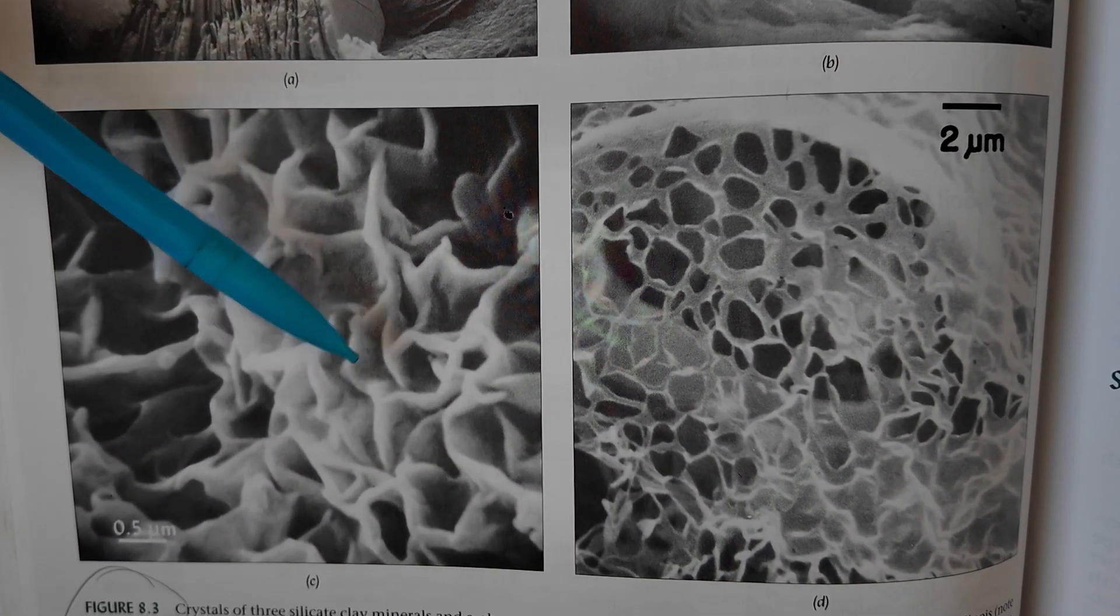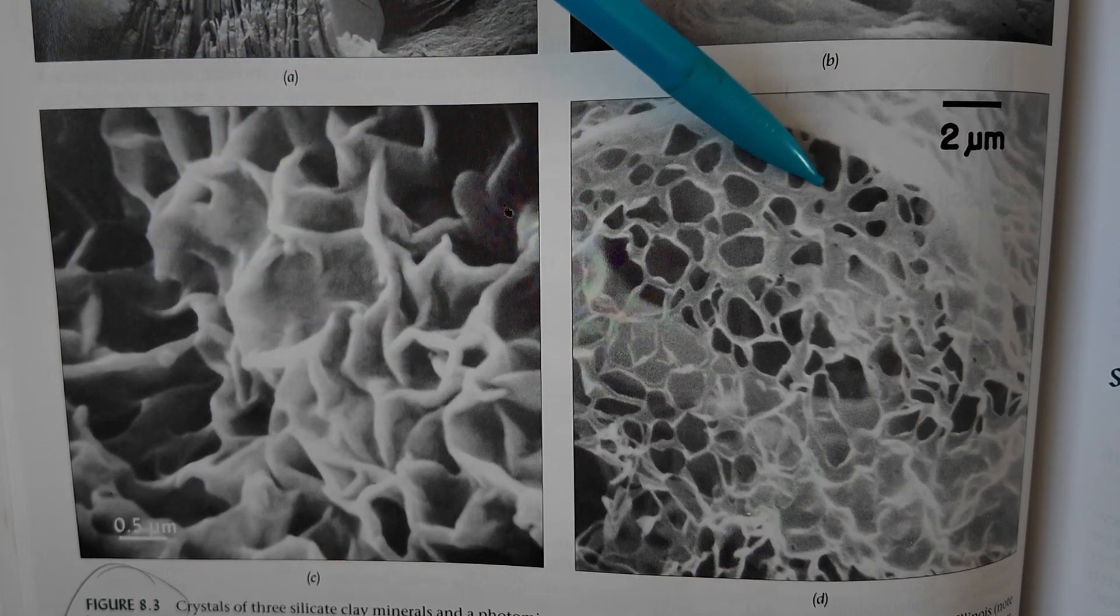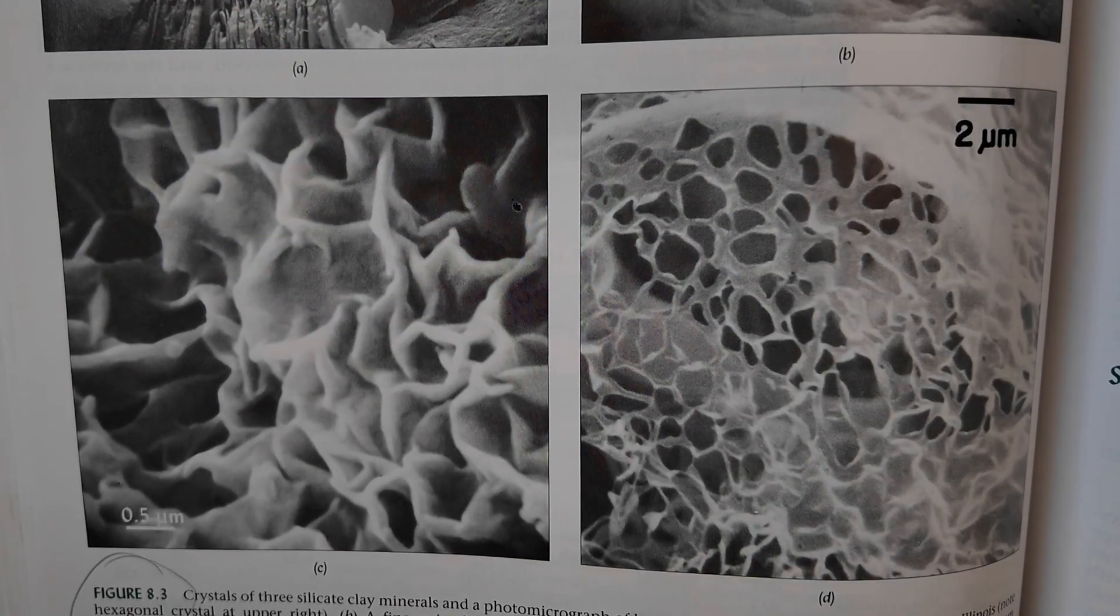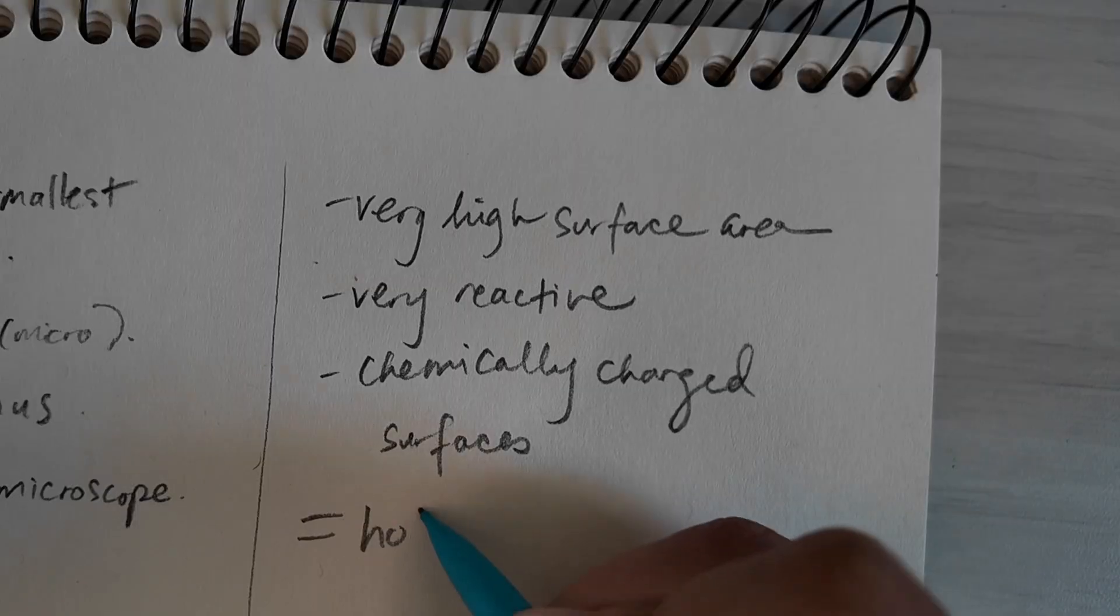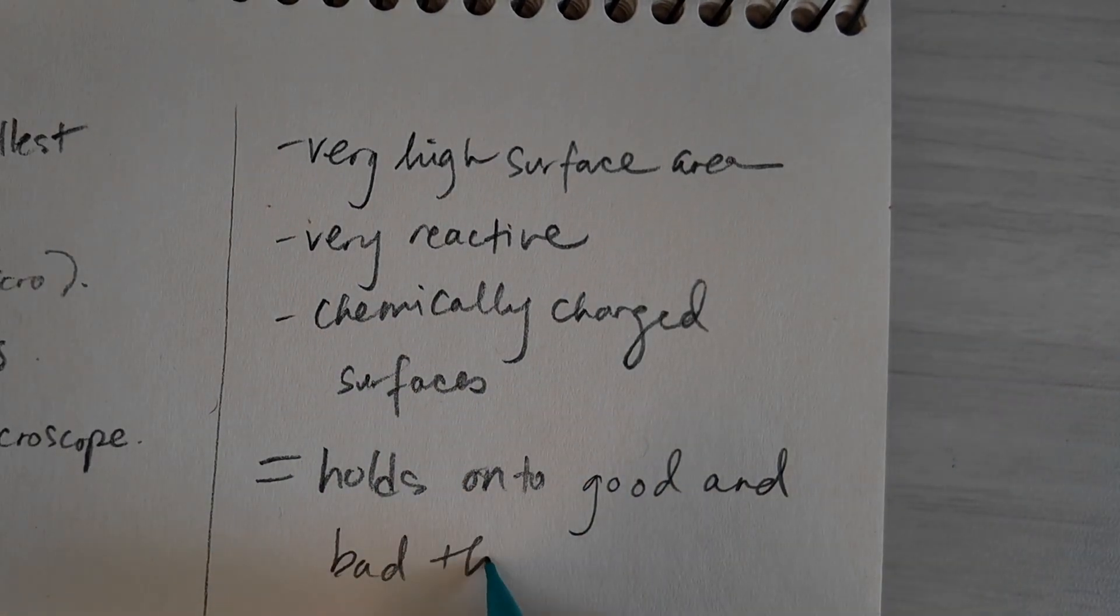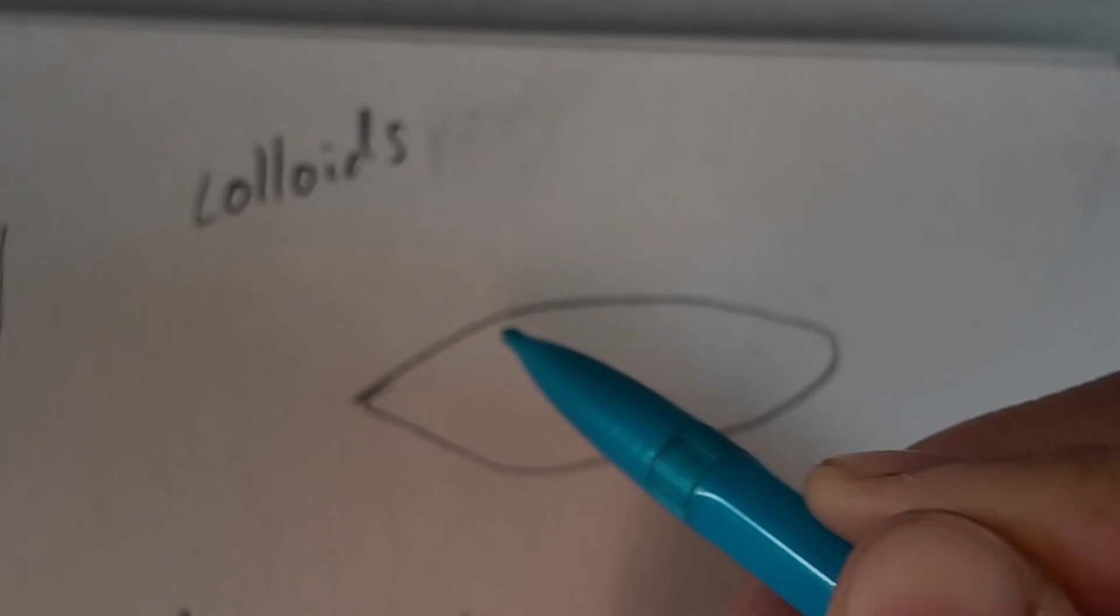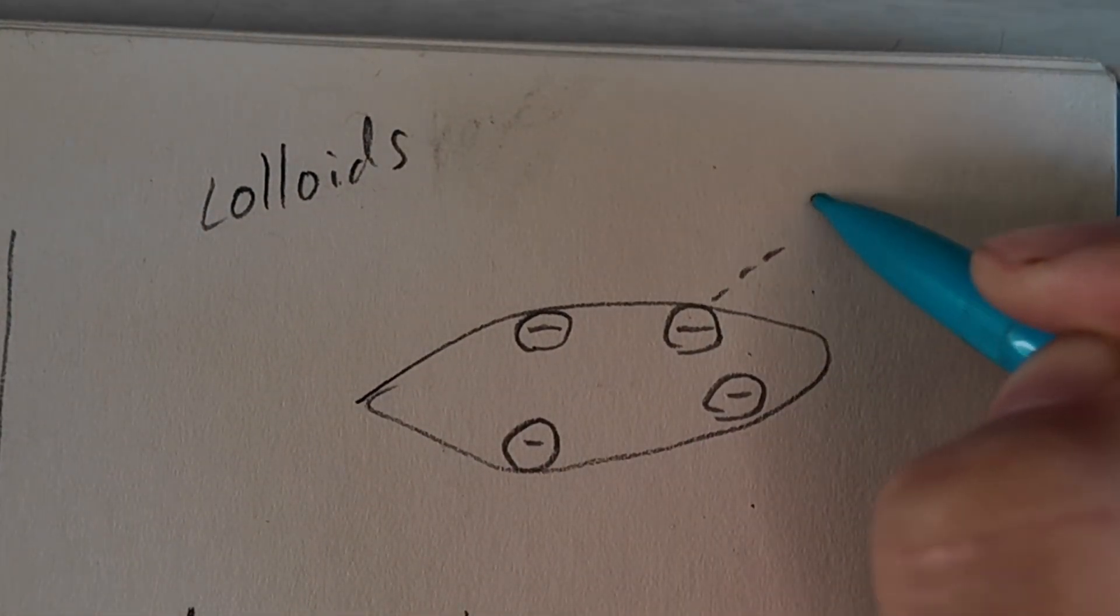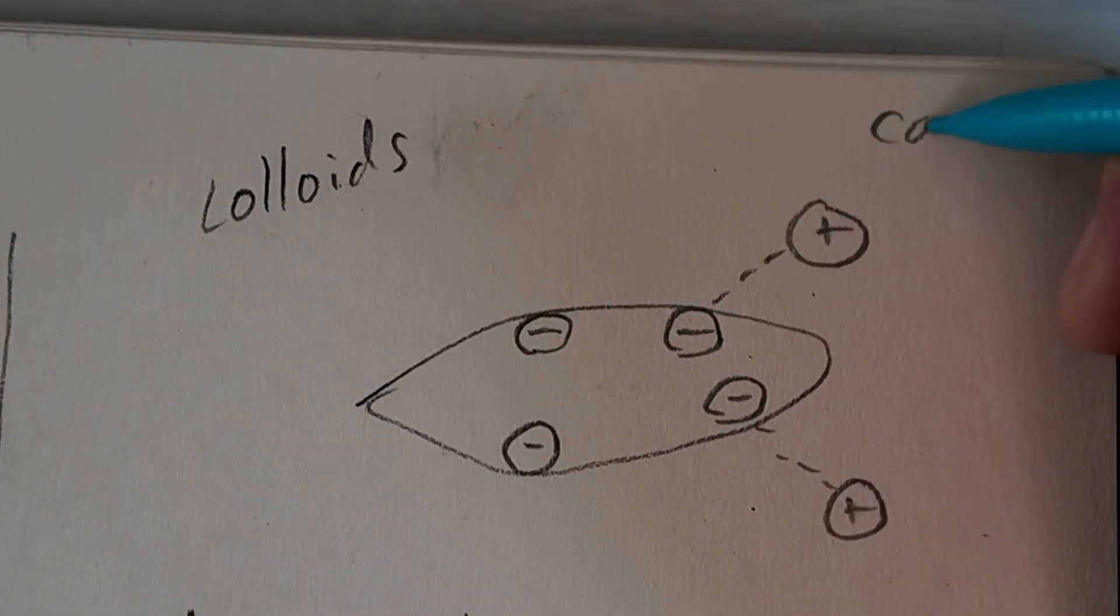Their high surface area and electrical charge means that they can hold on to all sorts of things like water, nutrients, toxins, pesticides, things that both help and hurt plants. Generally, their surfaces are negatively charged, which means that they're going to attract positively charged ions, aka the cations.